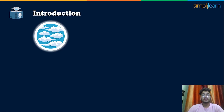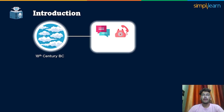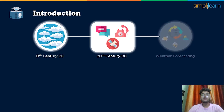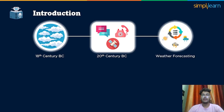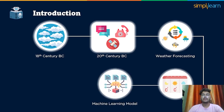From predicting the weather condition by examining cloud designs in Babylon in the 18th century BC, to using electronic messages, phones, and analyzing satellite images in the 20th century, the process of weather forecasting has evolved essentially throughout the long term. However, in this digitalized period, forecasting climate and recreating long-term climate patterns have been accomplished with the assistance of machine learning models by examining volumes of information by computers.